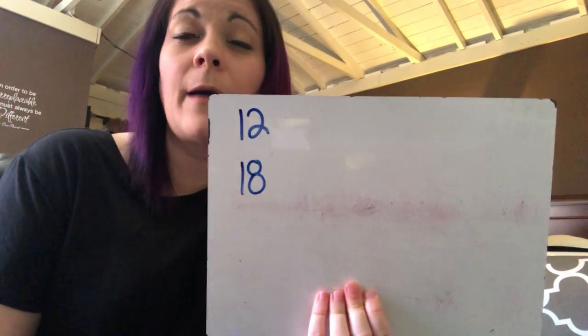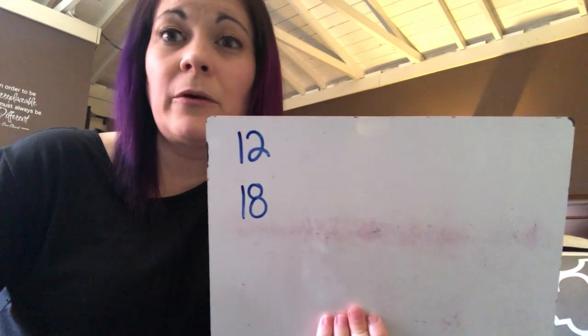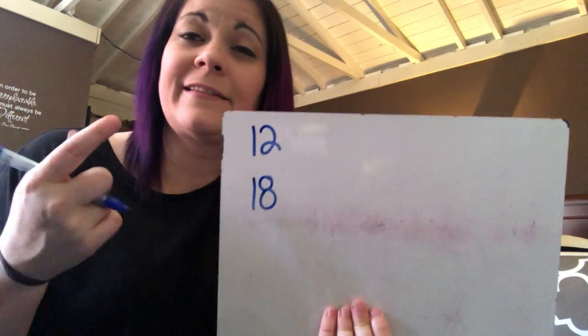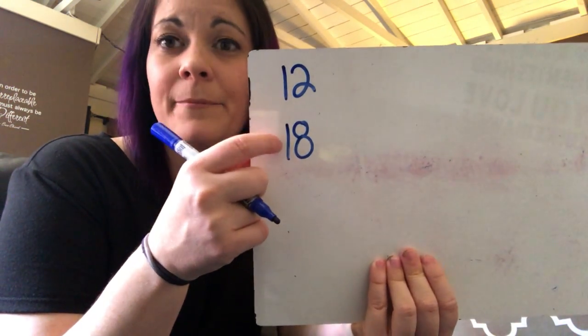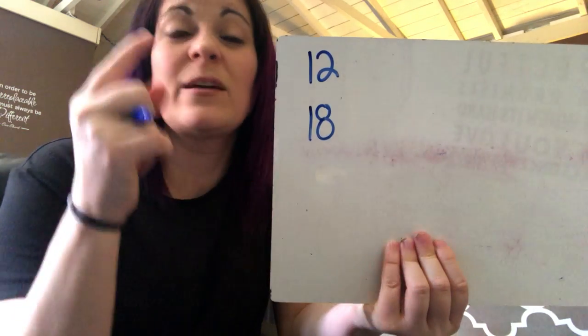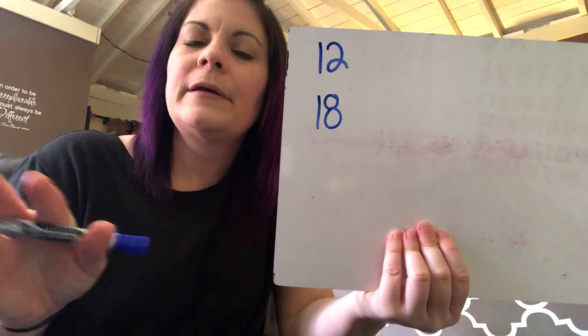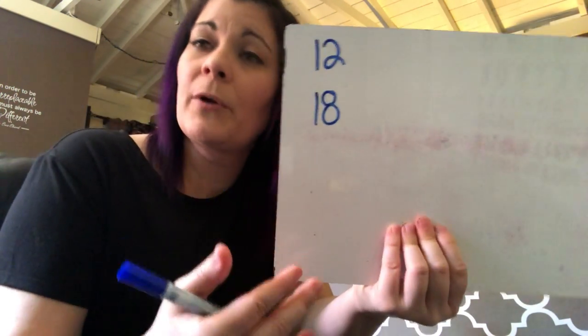The Least Common Multiple between two numbers is the multiple they have in common, but the smallest one. My strategy: take the highest number, list its multiples, and stop when you recognize it's also a multiple of the other number. If you need help, you can list both.